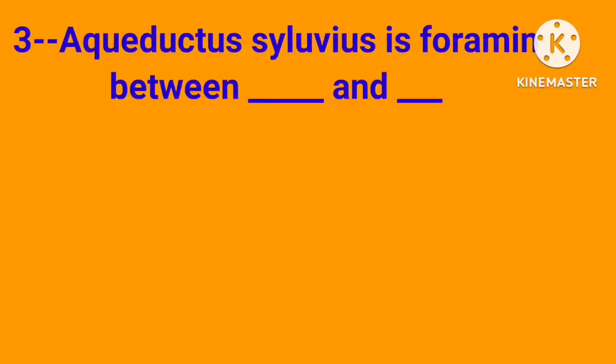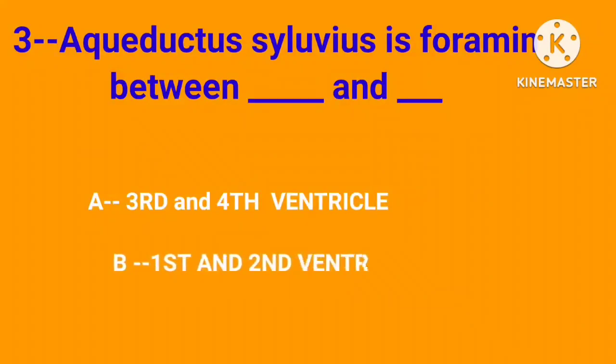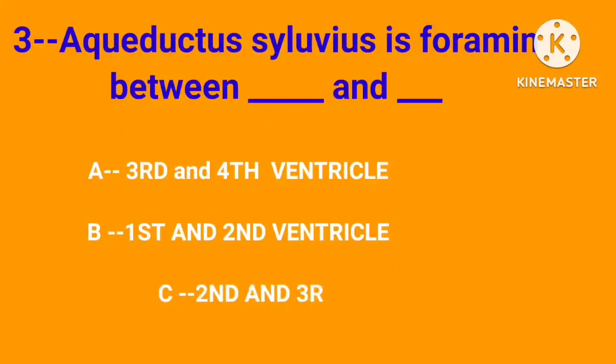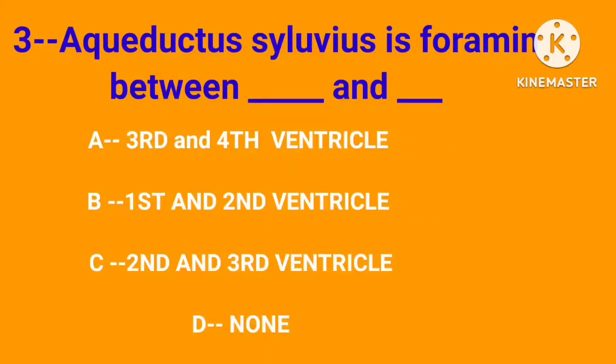Question number 3. Aqueductus sylvius is foramen between blank and blank. Option A, third and fourth ventricle. Option B, first and second ventricle. Option C, two and D, and third ventricle. Option D, none. Correct answer is option A.